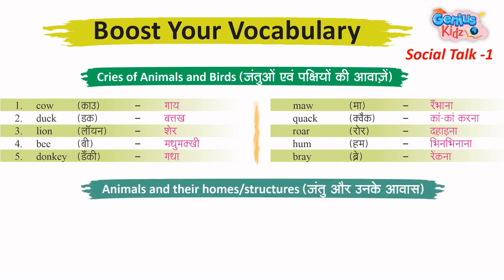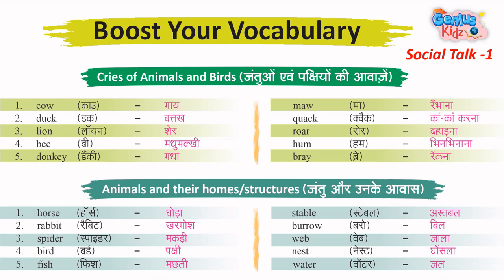Animals and Their Home Structures – Jantu aur unke Awaas. 1. Horse – Ghoda. Home: Stable – Astabal. 2. Rabbit – Khargosh. Home: Burrow – Bill.